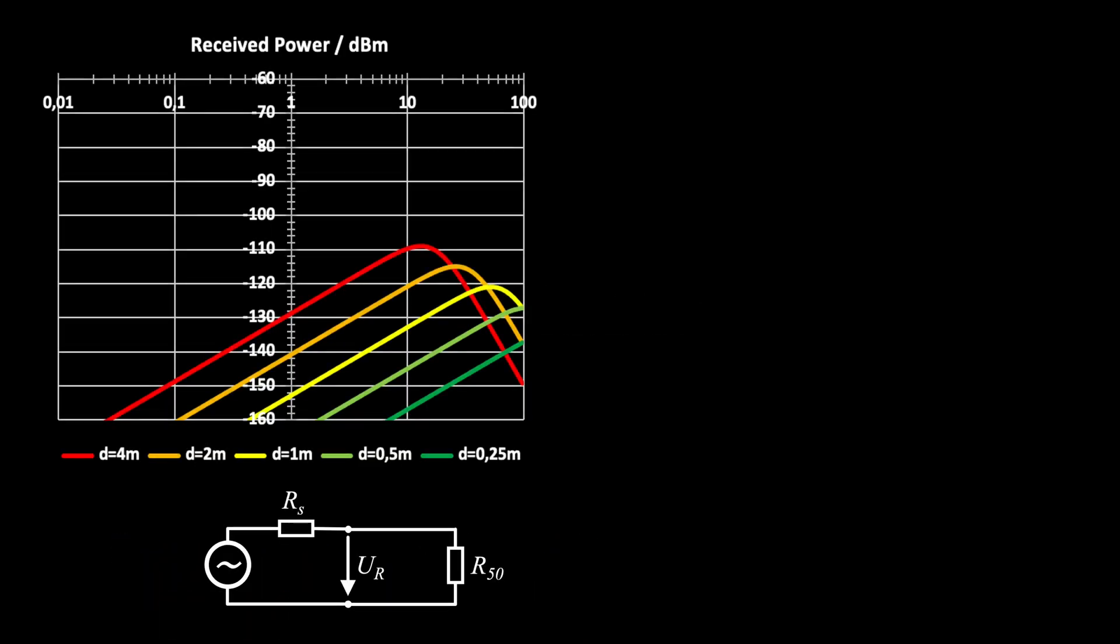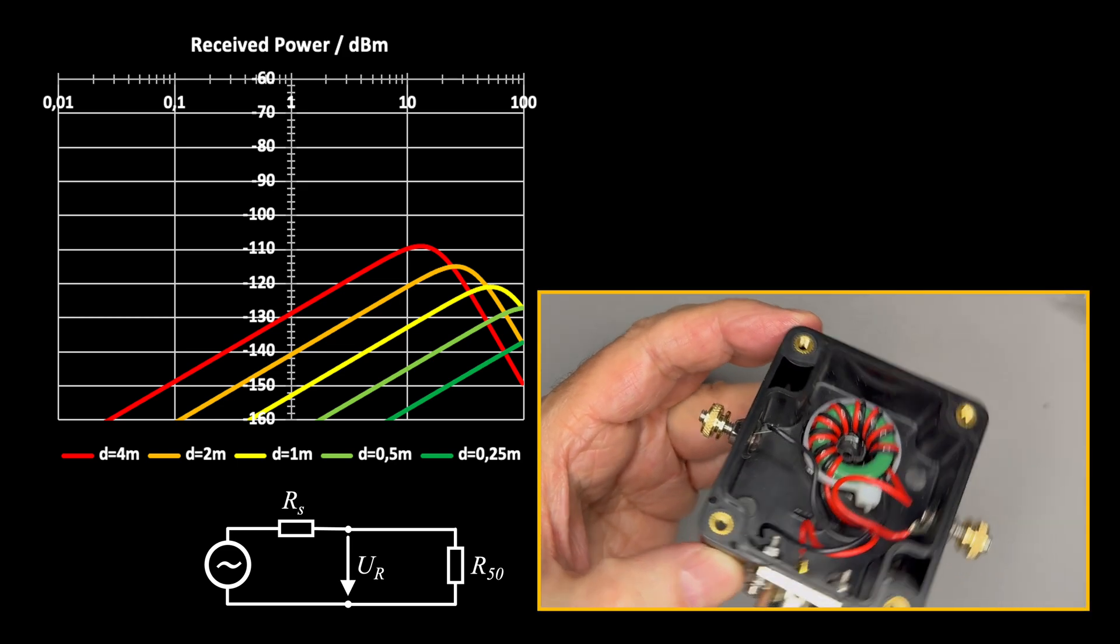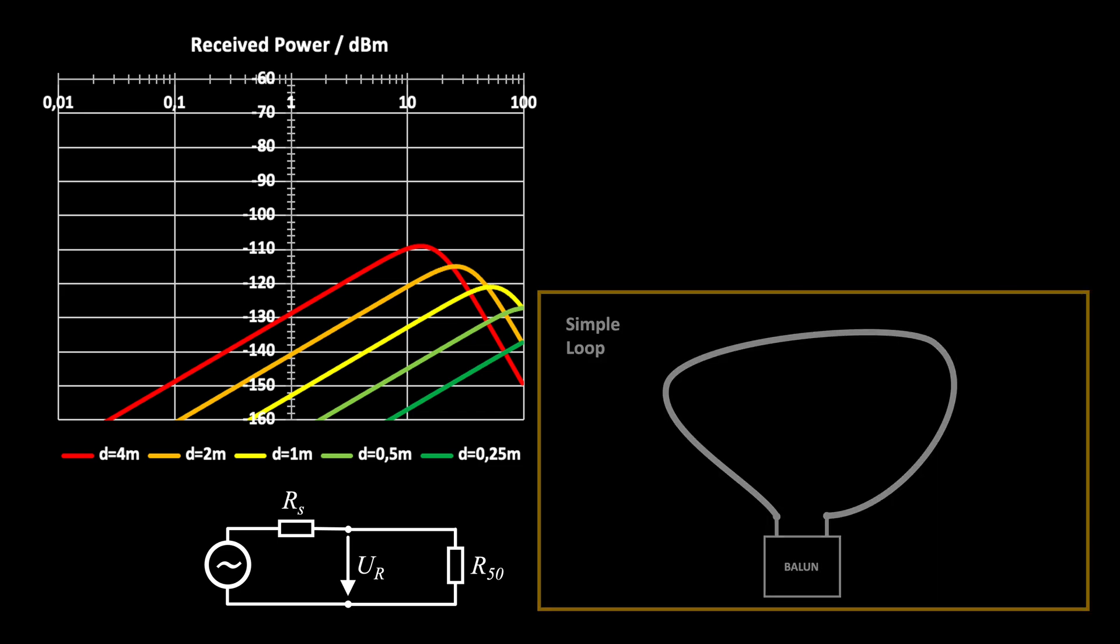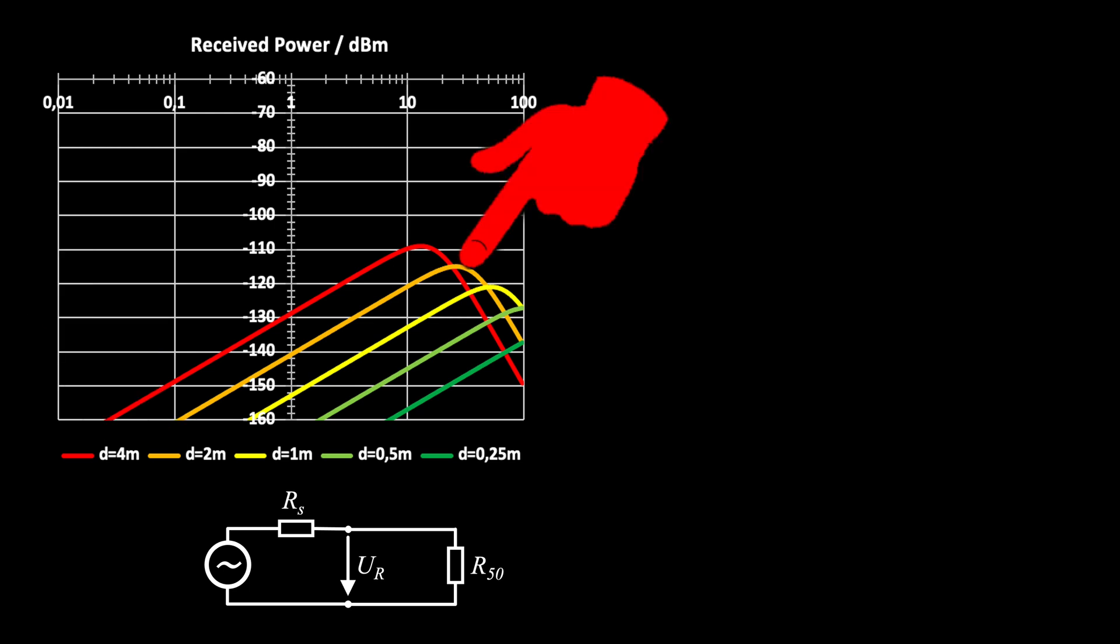In earlier videos, we took a deep dive into design and building electrical small loops for SDR reception. Although their shape isn't critical, we assumed it to be circular for analytical modeling. We tested 2 meter diameter, corresponding to a 6.28 meter circumference, which is delivering good reception up to a cutoff frequency of about 20 MHz.